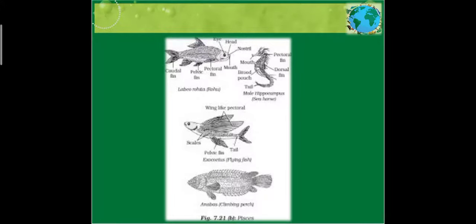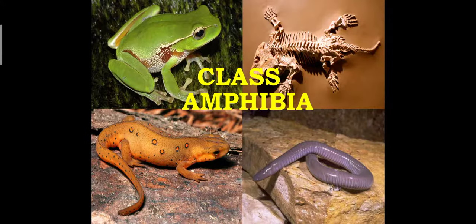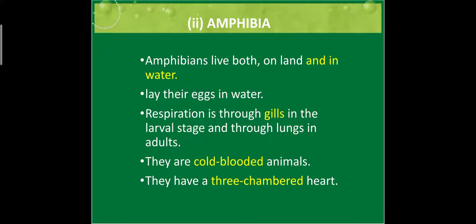Our second class is class Amphibia. Amphibians are totally different from fish as they do not have scales. They have mucus glands in the skin and they live both on land and in water. They lay eggs in water, respire through gills at the larva stage, and in the adult form they have lungs. They are cold-blooded animals and have a three-chambered heart.